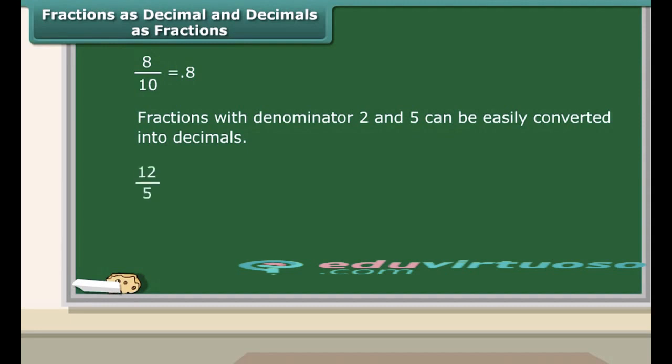First, convert the denominator of the fraction into 10 in order to know how many tenths are involved. To know the number of tenths, multiply and divide the given fraction by 2. This gives the new fraction 24 upon 10. So we have 2 ones and 4 tenths, or 2 ones and 0.4, which makes it 2.4.